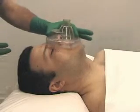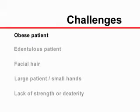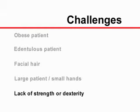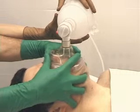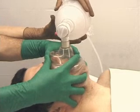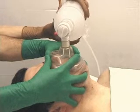It may be difficult or impossible to maintain an adequate seal using only one hand. This challenge can occur in obese or edentulous patients or in those with abundant facial hair. Additionally, large patients may present a challenge for individuals with small hands or with insufficient manual strength or dexterity. In these situations, the mask can be held with two hands, with each hand positioned as described in the one-hand technique, and a second person compresses the bag valve device.